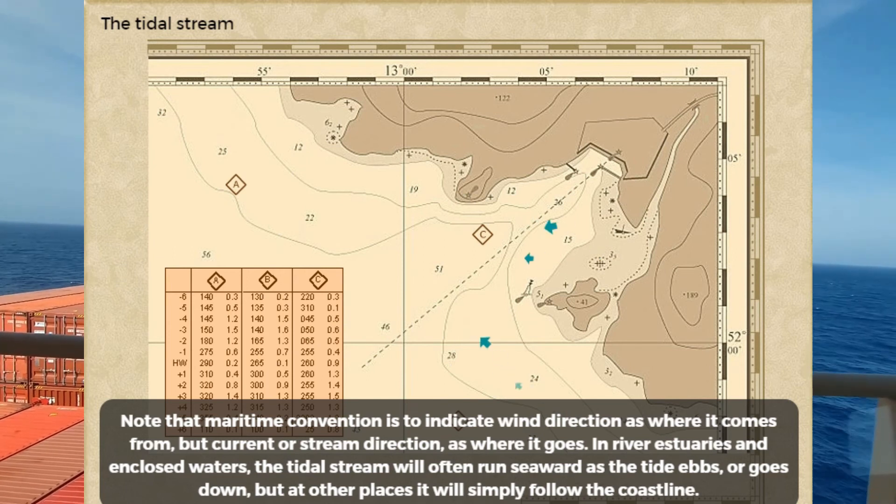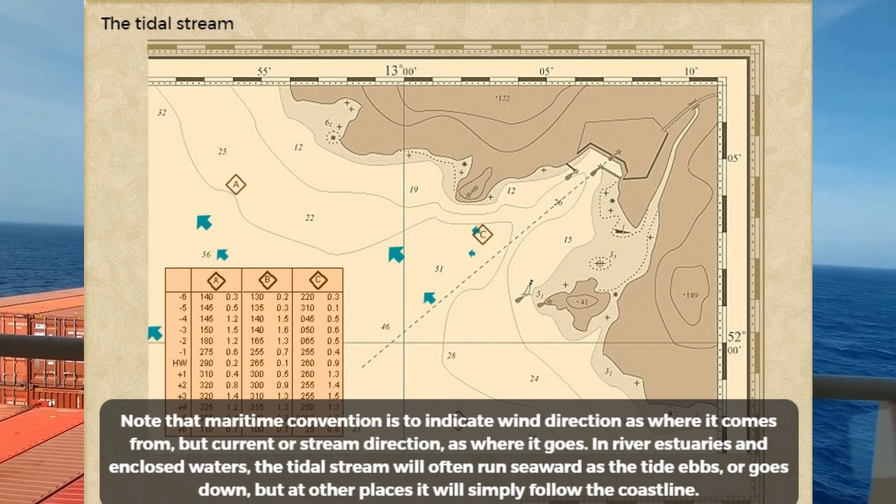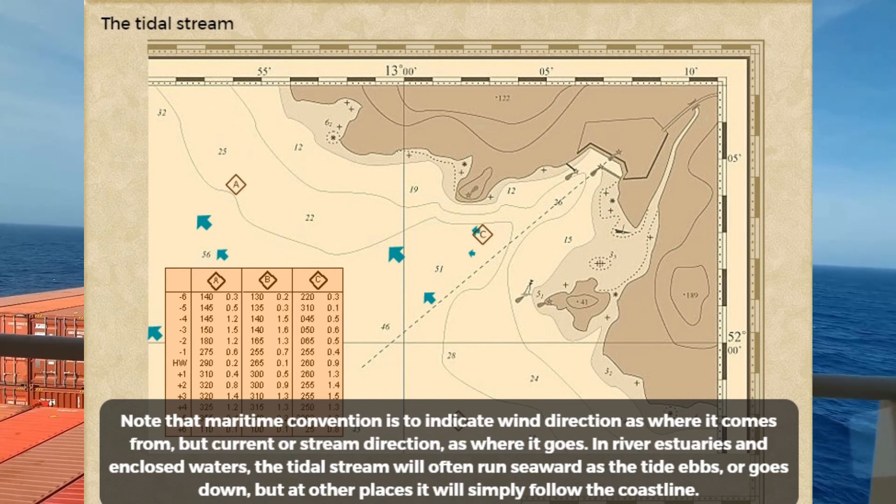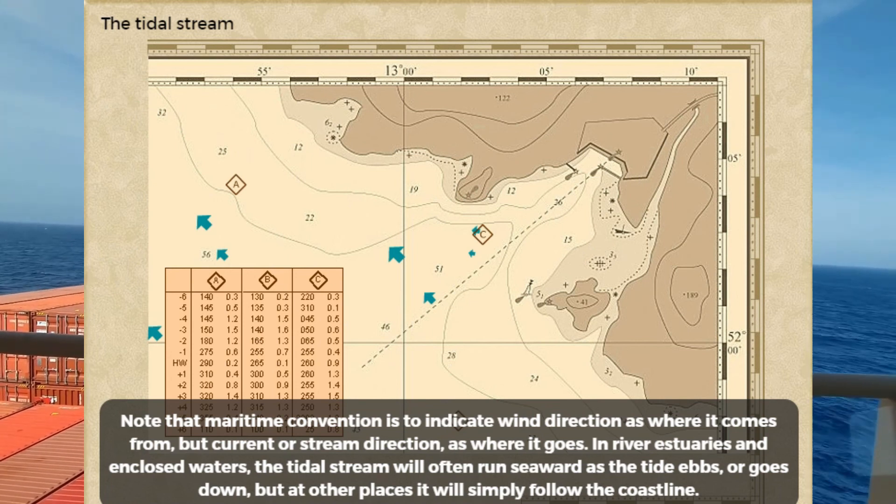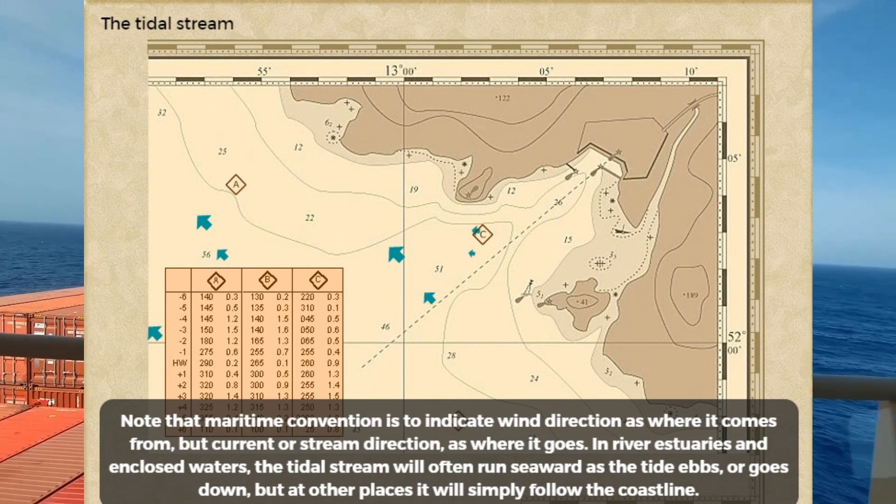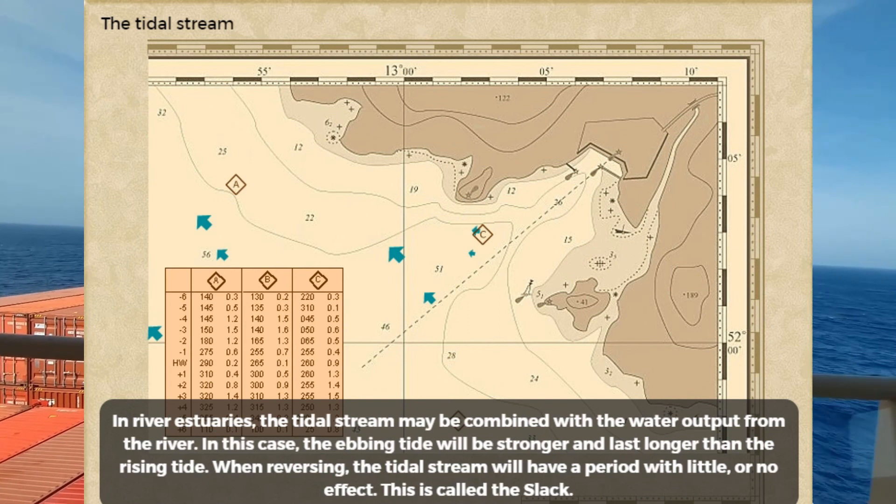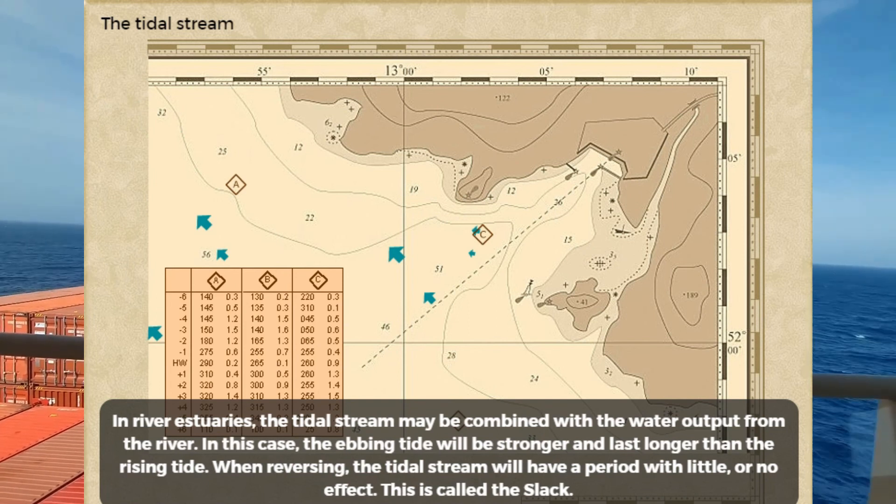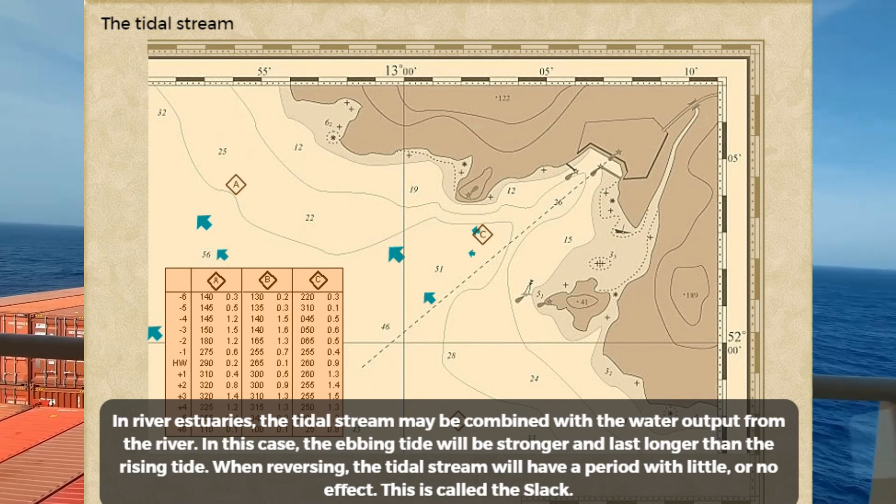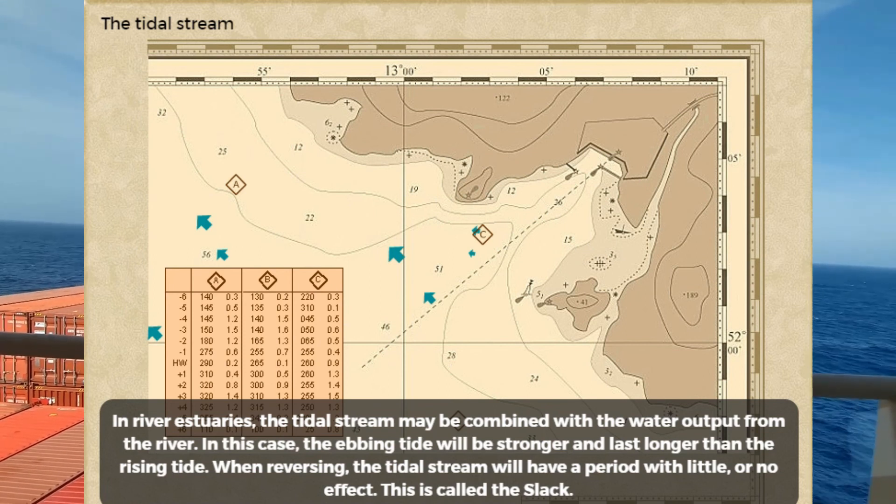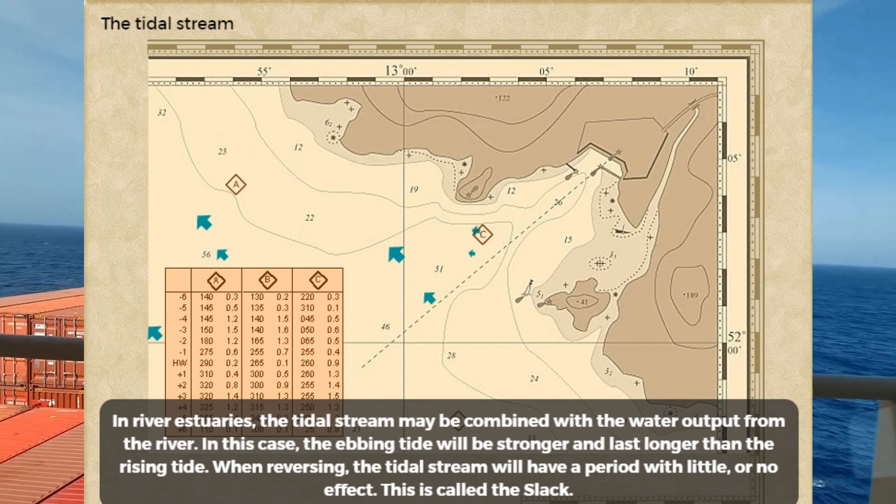In river estuaries and enclosed waters, the tidal stream will often run seaward as the tide ebbs or goes down, but at other places it will simply follow the coastline. In river estuaries, the tidal stream may be combined with the water output from the river. In this case, the ebbing tide will be stronger and last longer than the rising tide.